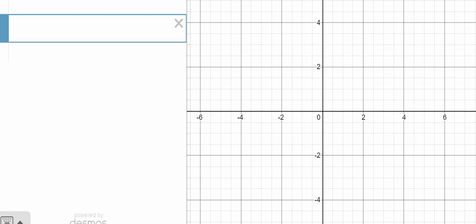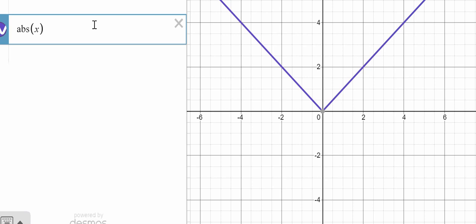So here we have Desmos pulled up. So we're going to go ahead and type in the absolute value, so abs, parentheses x, and that's going to give us our parent function.